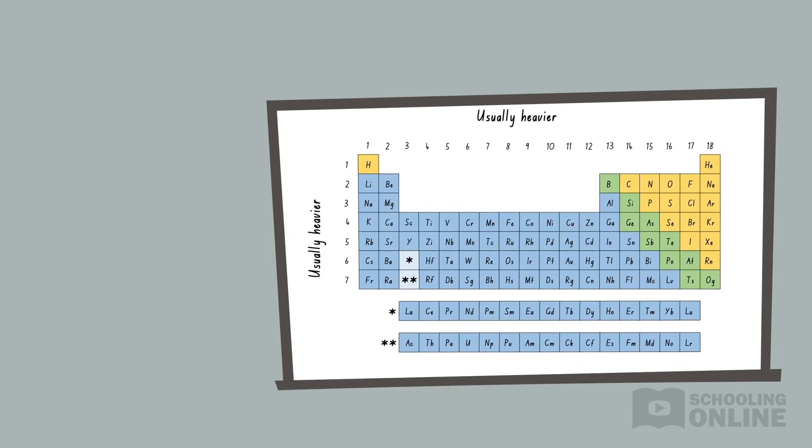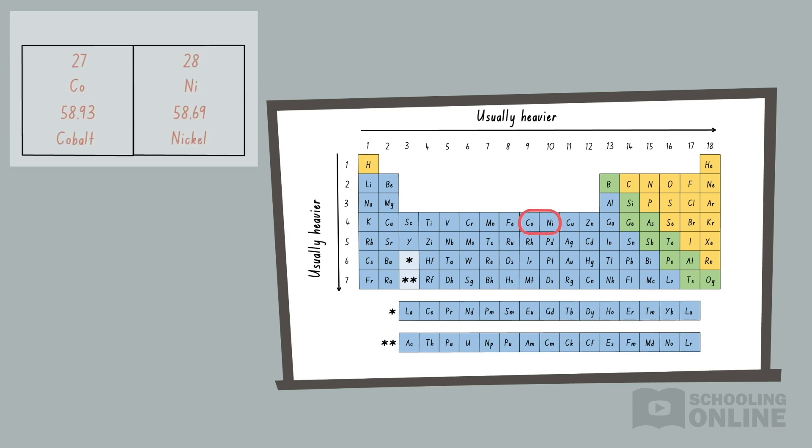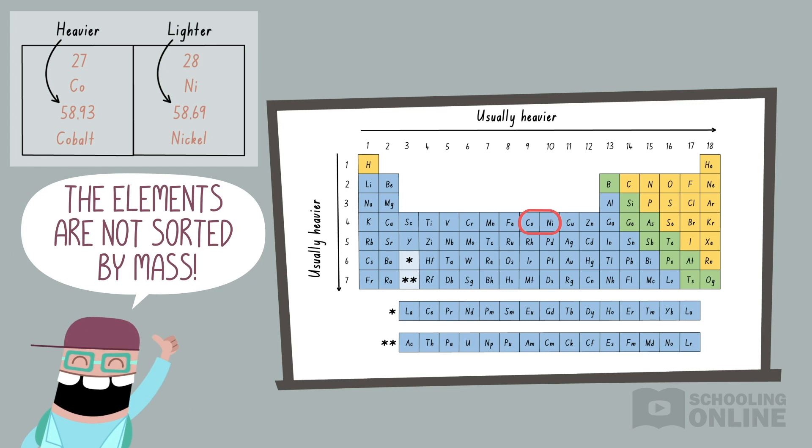You might have noticed that the standard atomic weight increases as you move right and down the periodic table. However, this isn't always true. For example, cobalt is heavier than nickel, even though it appears earlier. This is because cobalt is more commonly found as a heavier isotope, while nickel is more commonly found as a lighter isotope. Remember, we organise elements by their proton number. They are not sorted by mass.